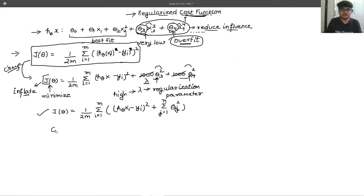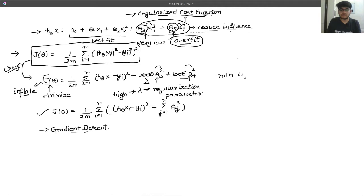The next step is to consider the gradient descent algorithm. Because the gradient descent algorithm works on the cost function, and since we have changed our cost function and it now contains some more variables, the gradient descent algorithm will also change. In gradient descent, we have these parameters, and what we try to do is minimize the cost function. This is the basic idea behind the gradient descent algorithm.